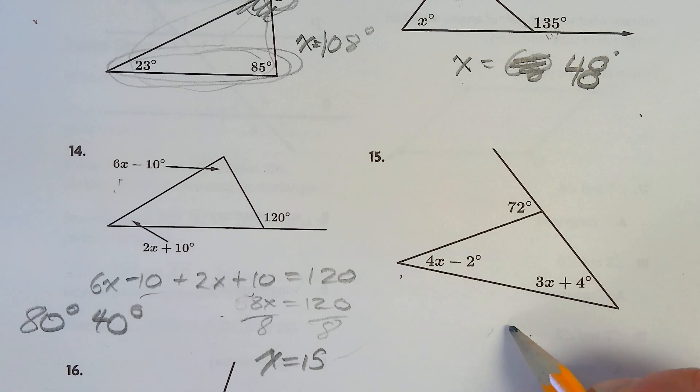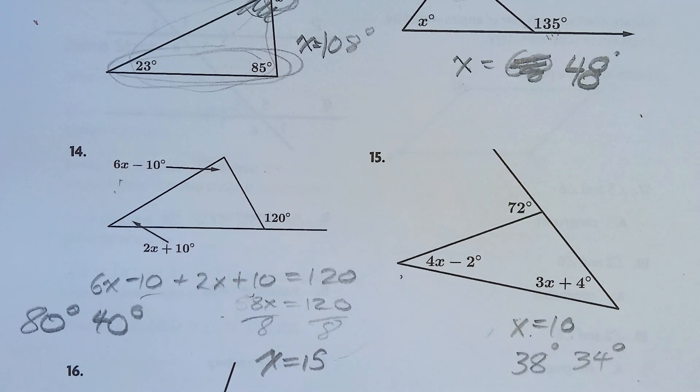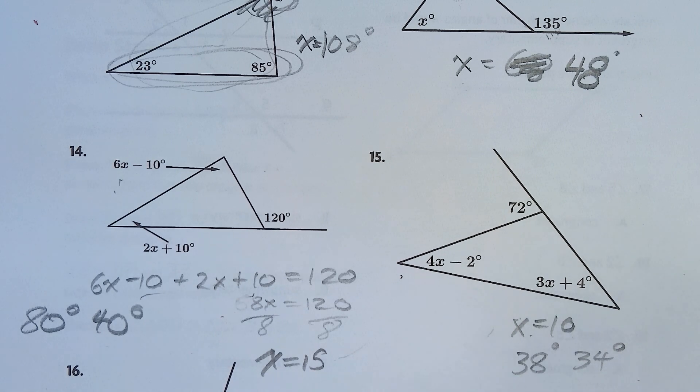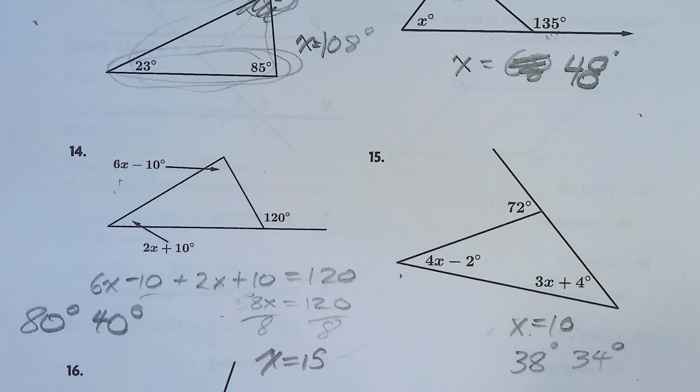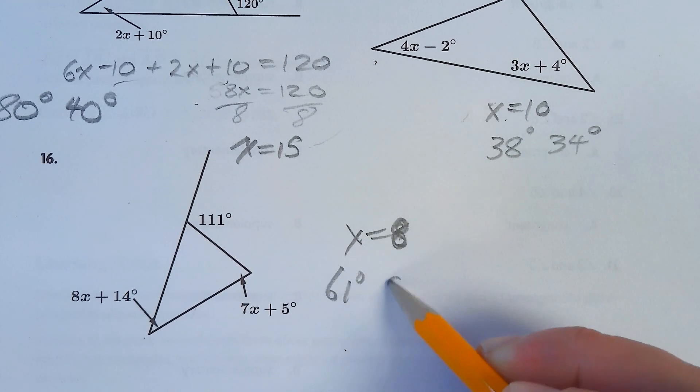More algebra. I'll just give you the answers. Problem 15, X equals 10. And this is according to the book. And the angles are these two angles. Problem 16, X equals 8. X equals 8. And the angles are 61 degrees and 50 degrees.